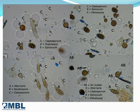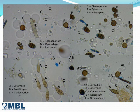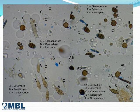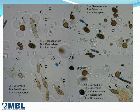What spore characteristics are used in identification? Some of the characteristics used in fungal spore identification include spore size, spore shape, number of cells, attachment scars, wall characteristics, and spore color.